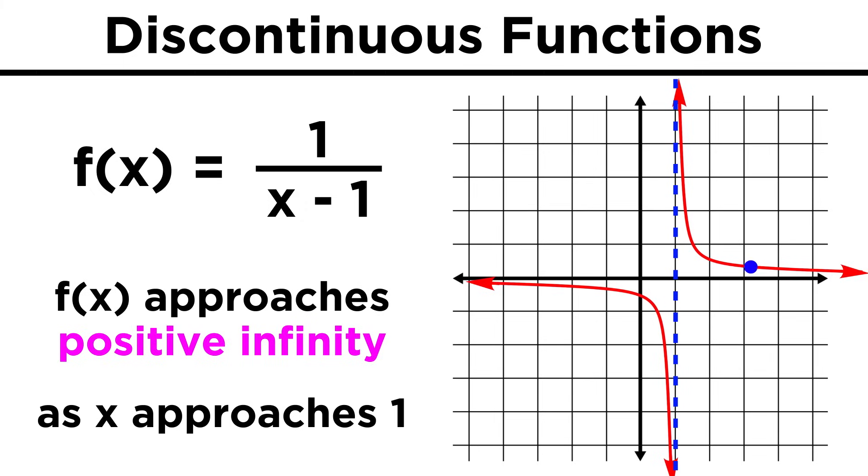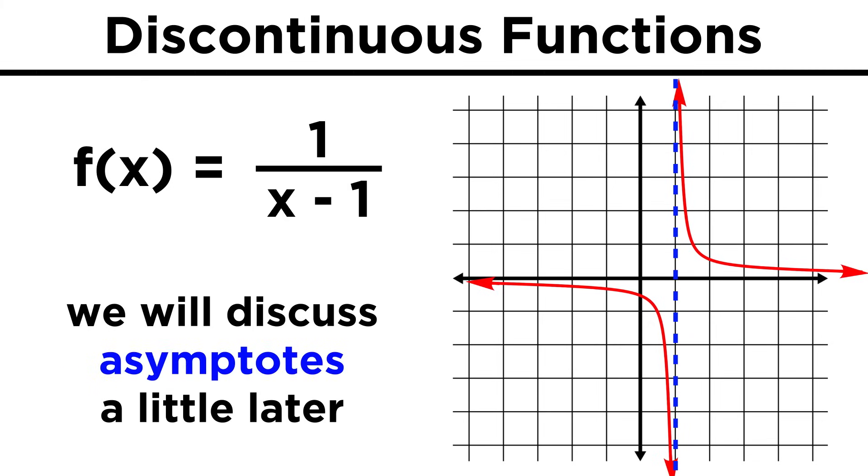When approaching from the right, it's essentially the same thing. The function goes to positive infinity as x approaches one. We will talk more about asymptotes later.